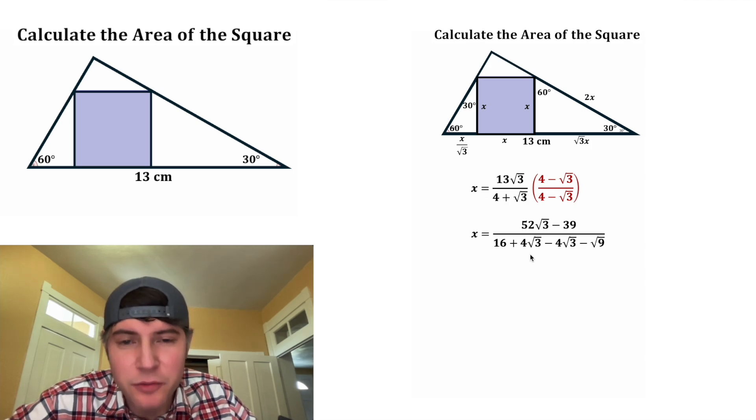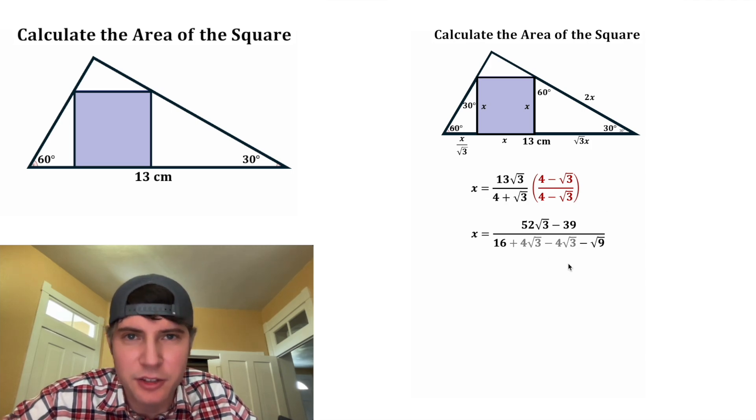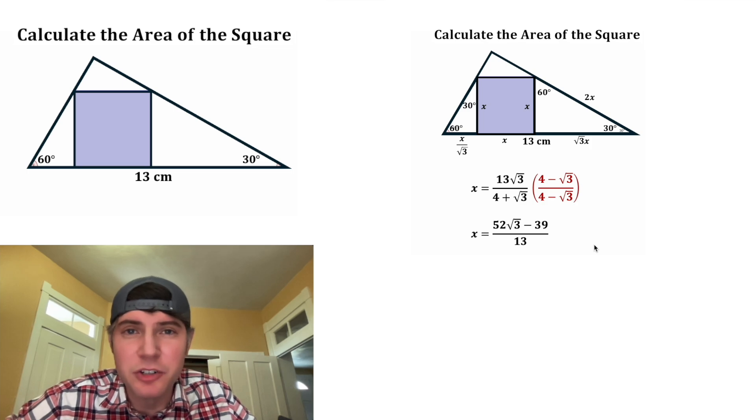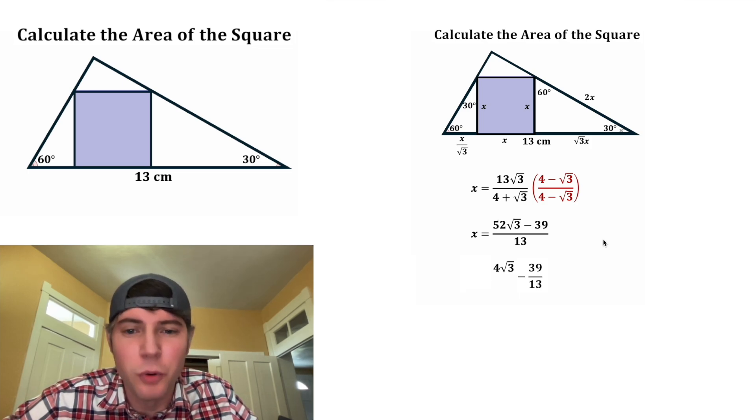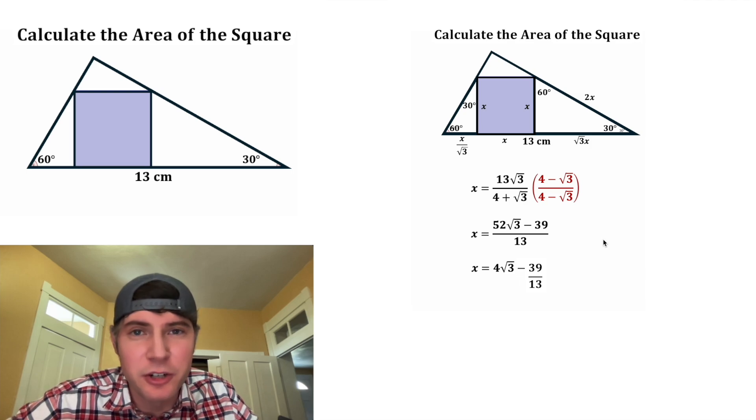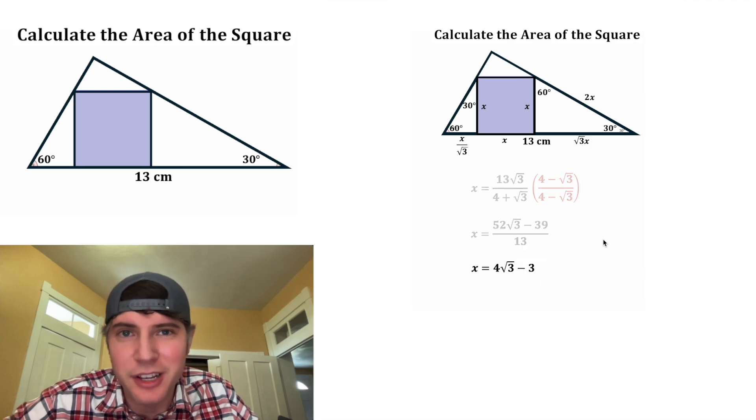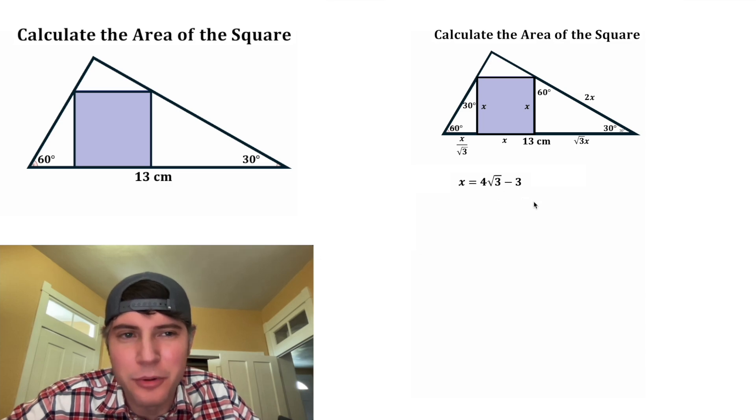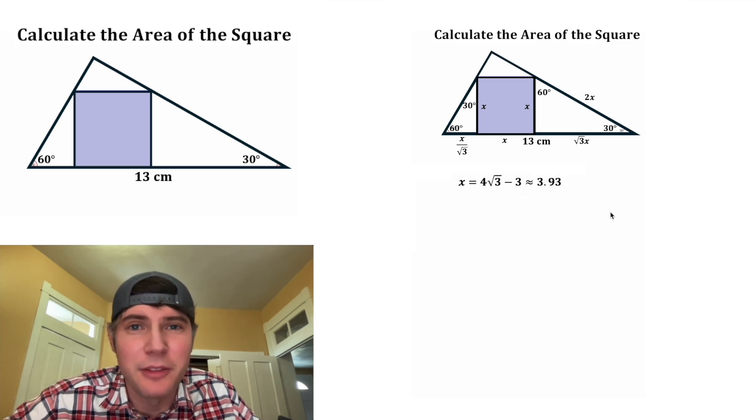And on bottom, this positive four root three and negative four root three will cancel each other out. Square root of nine is equal to three, and 16 minus three is equal to 13. So this can be split up into two separate fractions. 52 root three divided by 13 is four root three, and then we're going to subtract 39 divided by 13, which is three. And now we have a nice clean exact value for X: four radical three minus three. And that is approximately equal to 3.93.